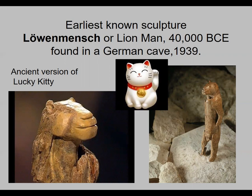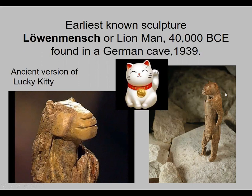The earliest known sculpture is the Löwenmensch, or the Lion Man. When they found it, it was in a bunch of different pieces — all broken up — and then somebody put it back together. At that time in Europe, China, and all parts of the world, lions roamed everywhere, and people really revered them because they were scary and powerful. This was either used as an item of worship, or maybe it was a kid's toy — like maybe it originally had one of its hands waving like the little lucky kitty.